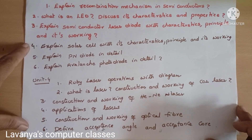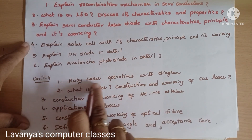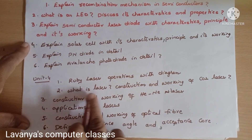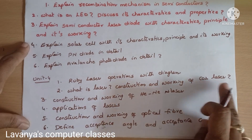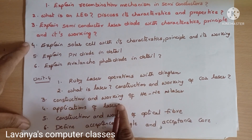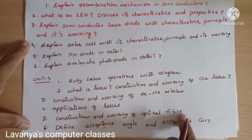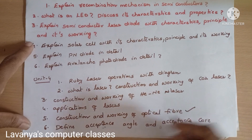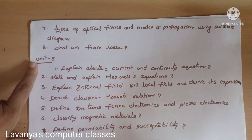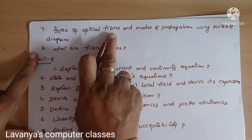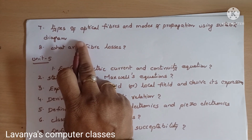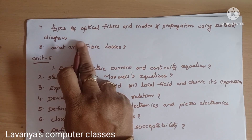Unit 4 questions: First, explain ruby laser operation with a neat diagram. Second, what is a laser? Explain the construction and working of CO2 laser. Third, explain the construction and working of He-Ne laser. Fourth, explain applications of laser. Fifth, explain construction and working of optical fibers. Sixth, define acceptance angle and acceptance cone. Seventh, explain the types of optical fibers and modes of propagation using a suitable diagram, and what are the fiber losses?